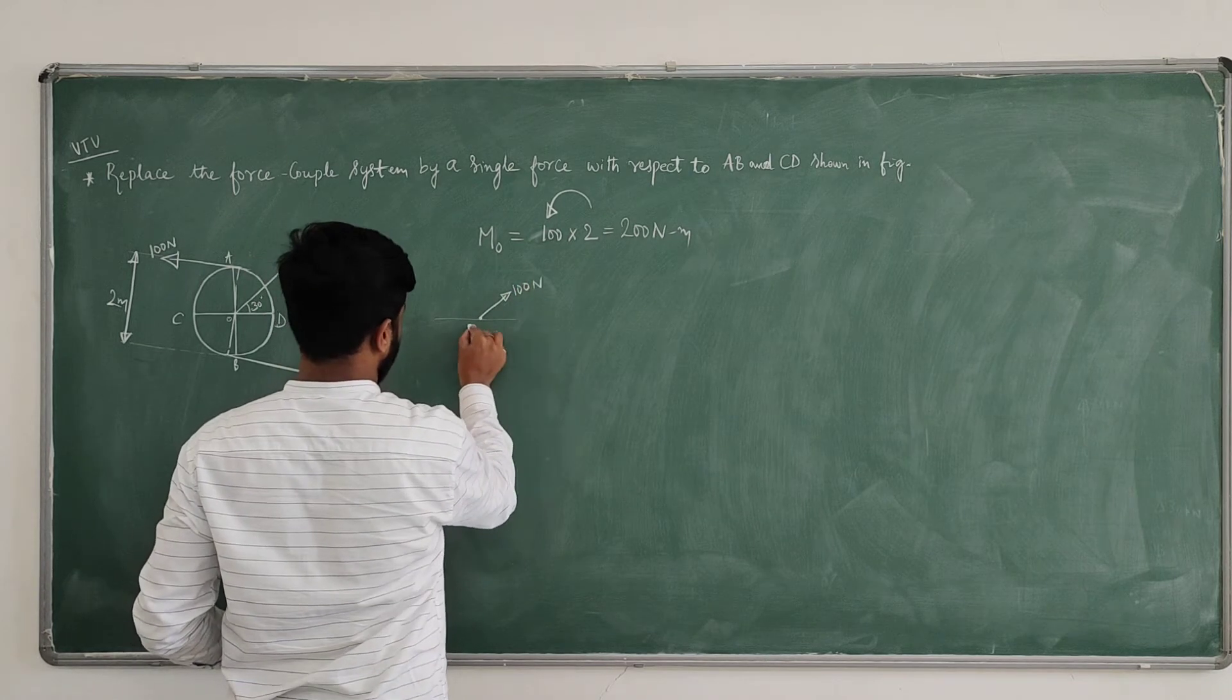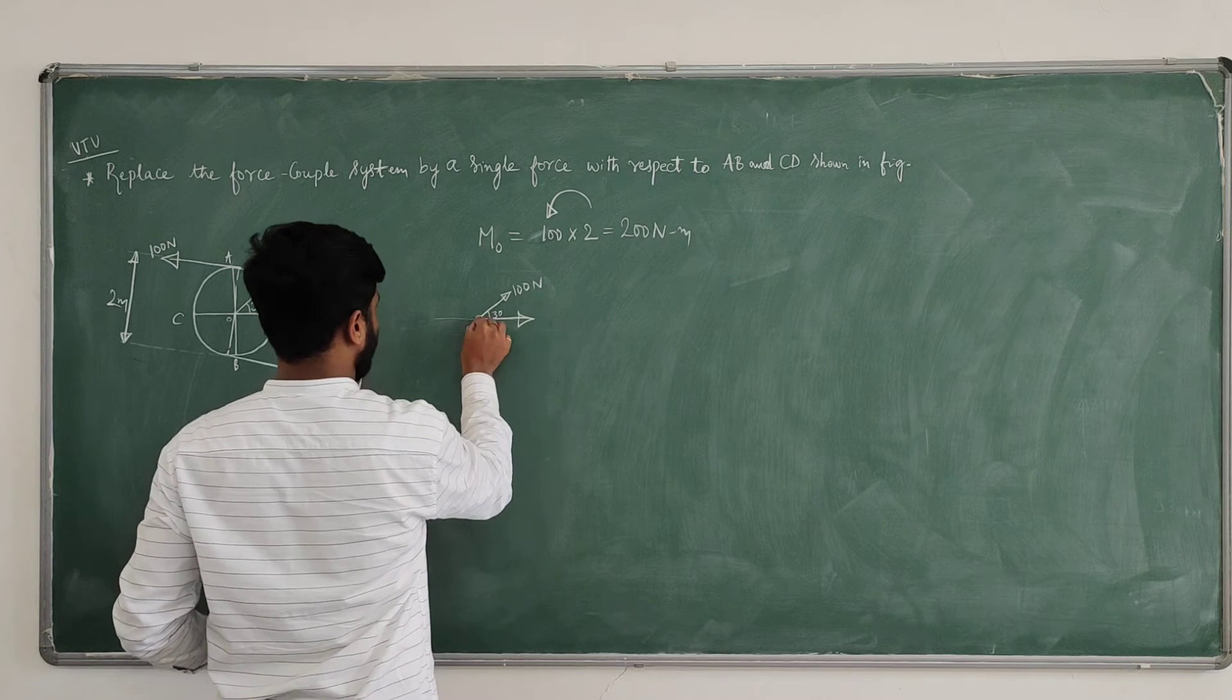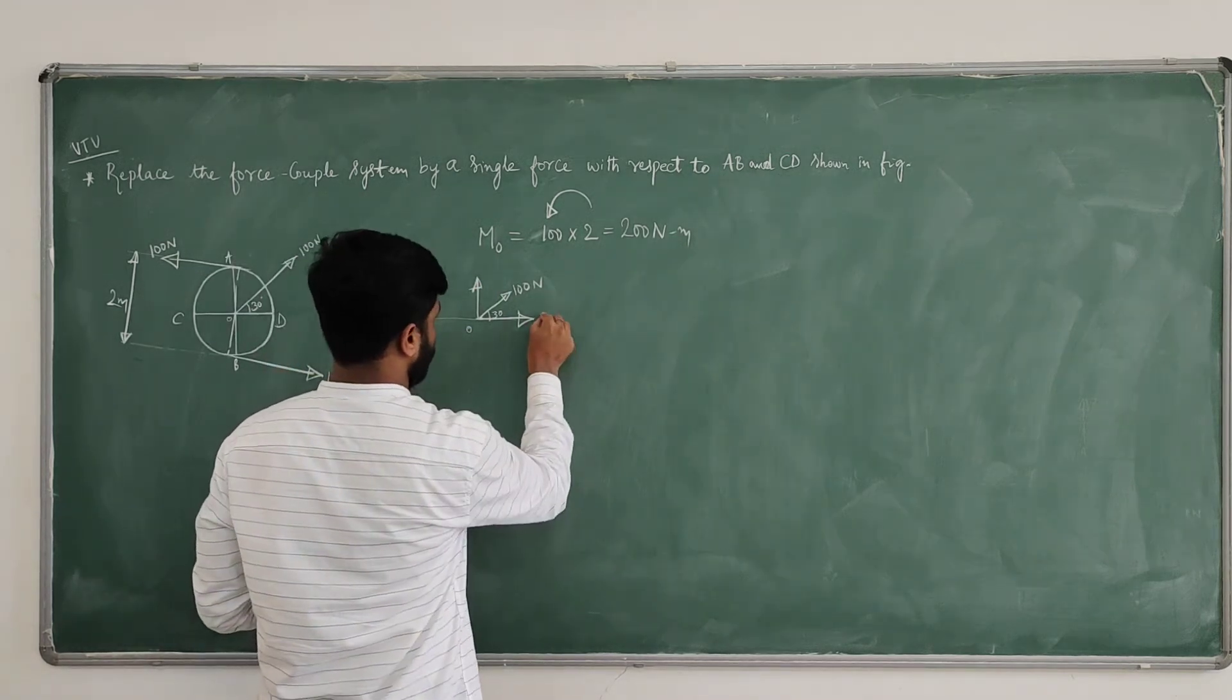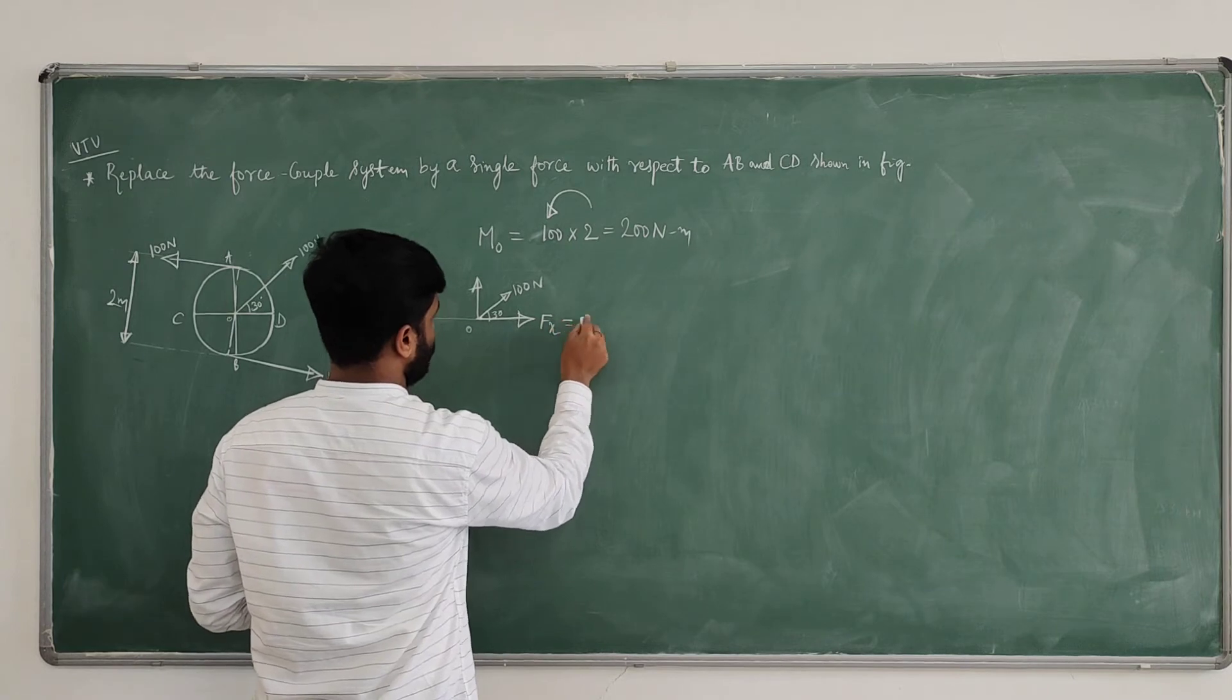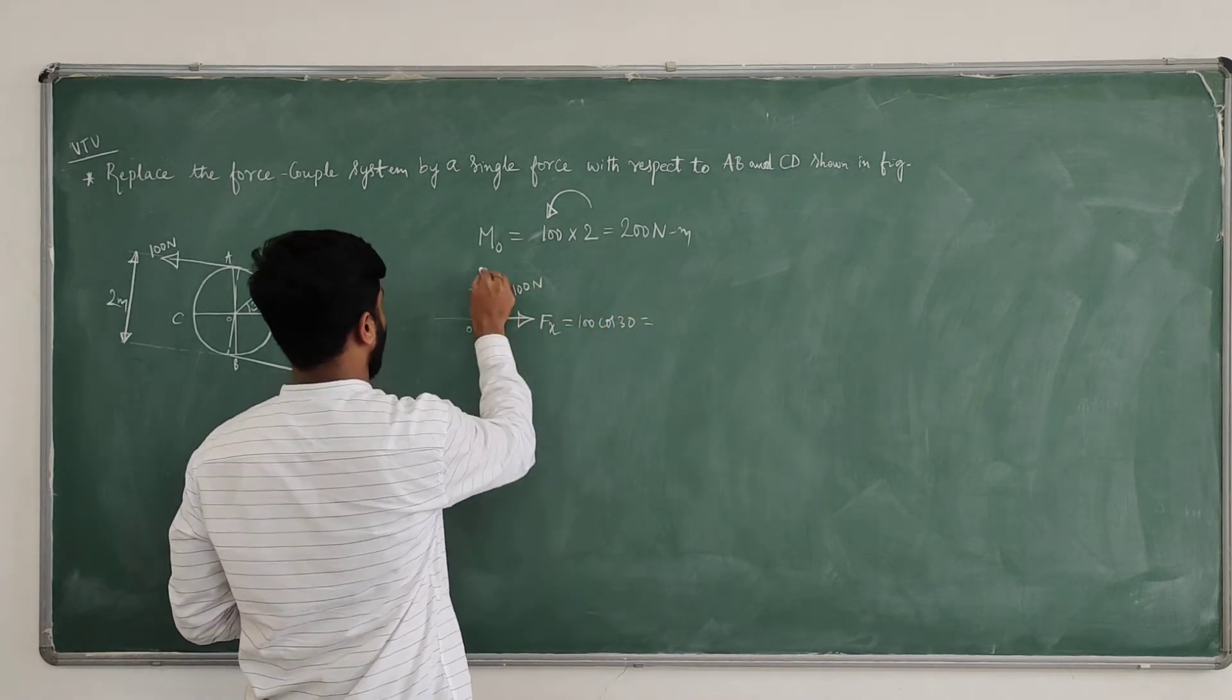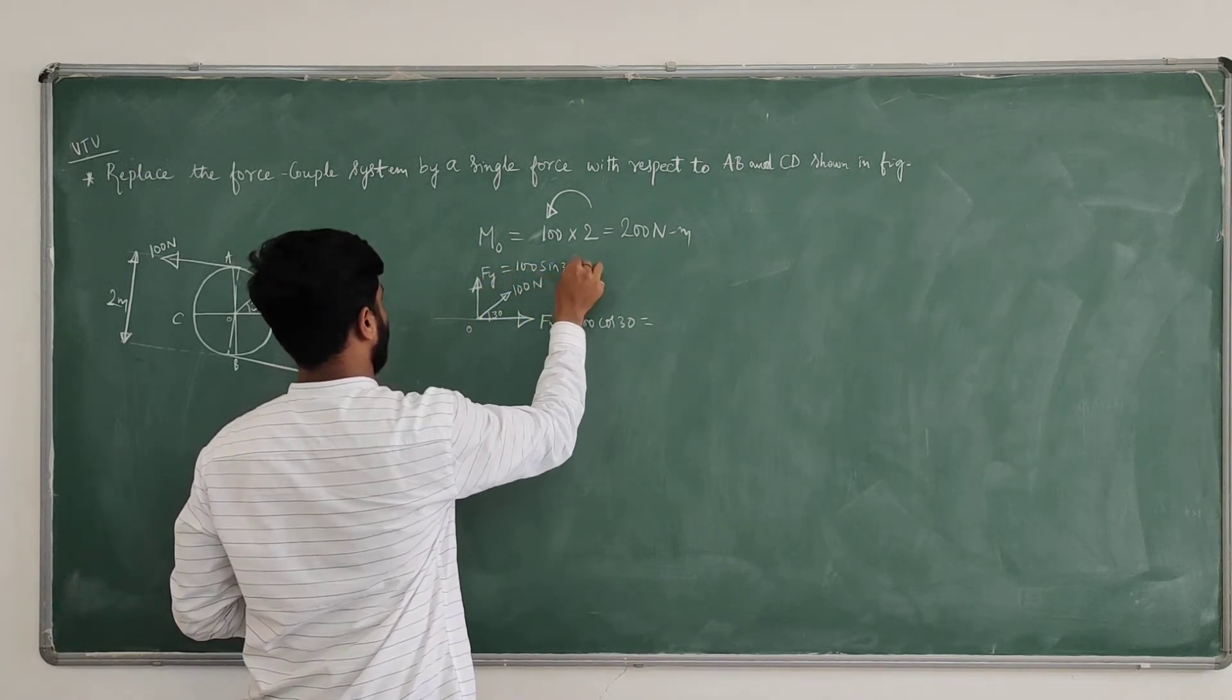Hundred newton force. This is O. And 30 degrees. You are getting X and Y component. You can take this as Fx. Fx value is 100 cos 30.